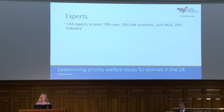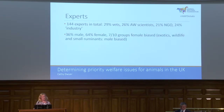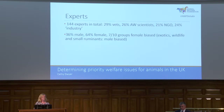In total, we recruited 144 experts to our panels, roughly equal in numbers: 29% were practicing veterinarians, 26% were animal welfare scientists, 21% worked for the charity sector, and 24% worked for the particular industry or area of those species. We were about two-thirds female, which probably reflects the demographic of the people we were reaching out to. Seven out of 10 species groups were female-biased, but the exotics, wildlife, and small ruminants groups had more men.